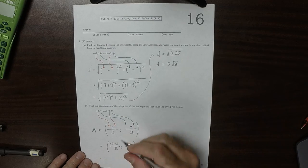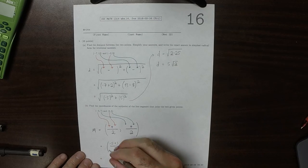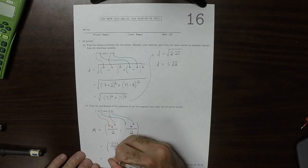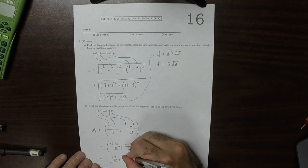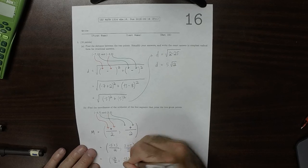So then that would be negative 5 plus 3 is negative 2 over 2. 7 plus 5, that's 12 over 2.